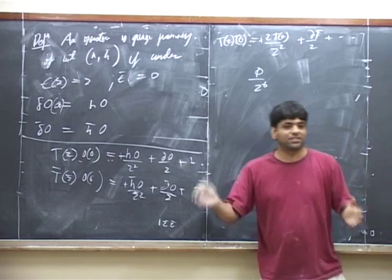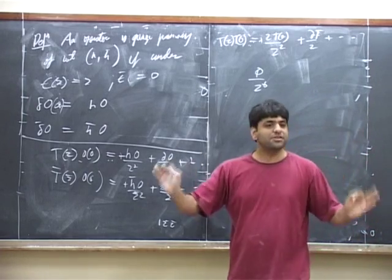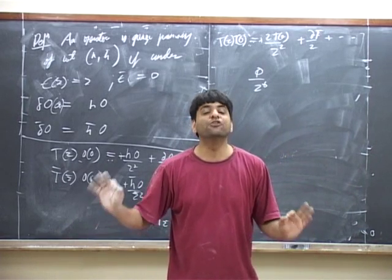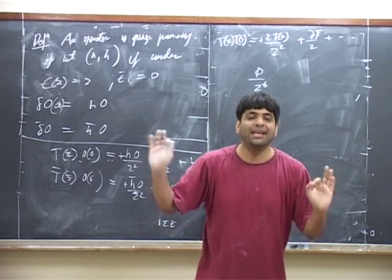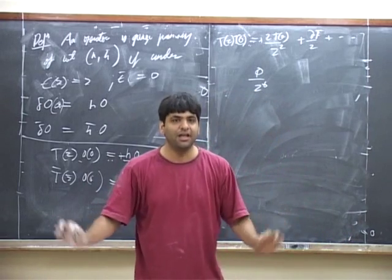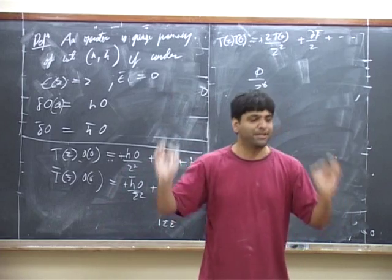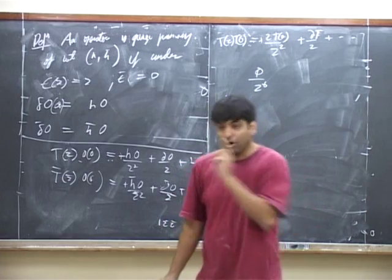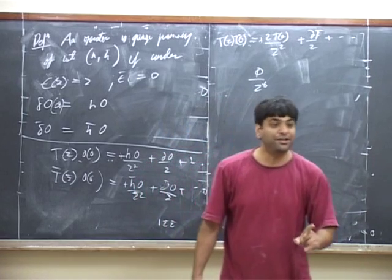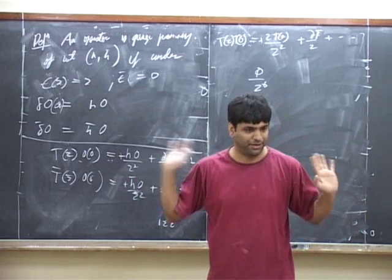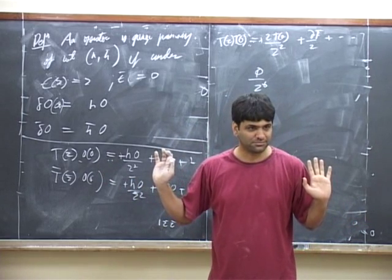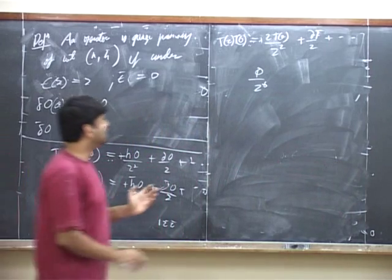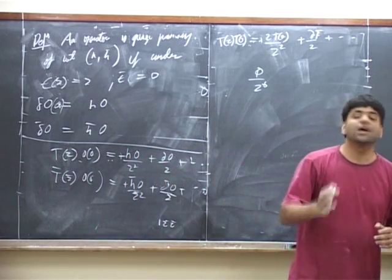We will prove at the next class or the class after that, that in any unitary conformal field theory, there is no local operator of dimension less than 0. Moreover, there is a unique operator whose dimension is 0 and that is the identity operator.